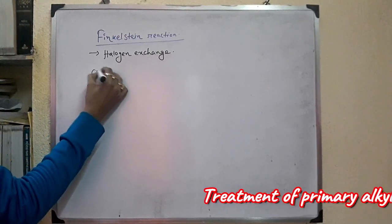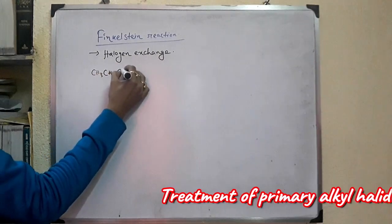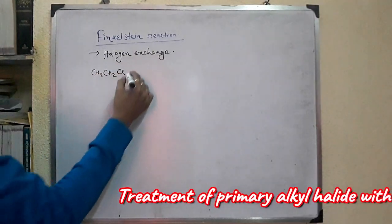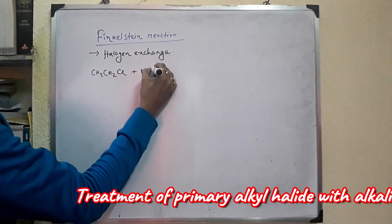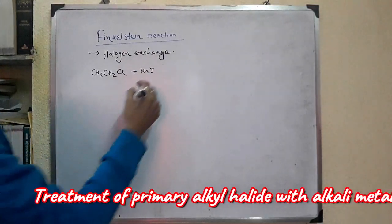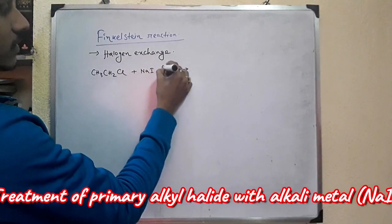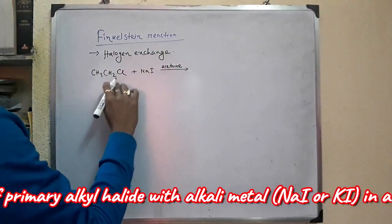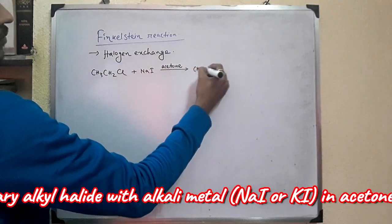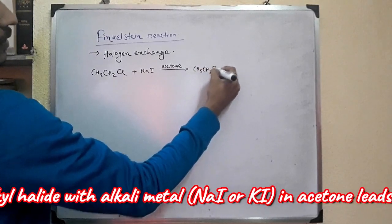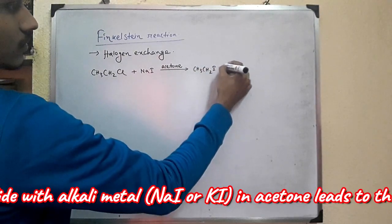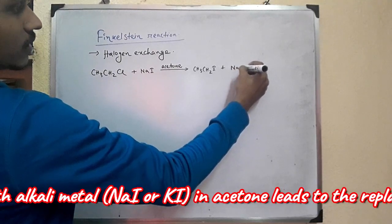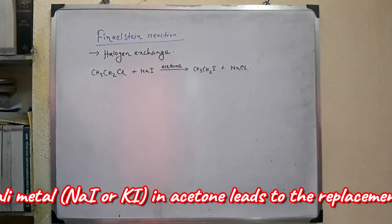For example, CH3CH2Cl ethyl chloride when treated with sodium iodide in acetone, it is converted into ethyl iodide plus NaCl is also formed.